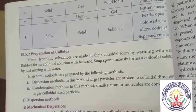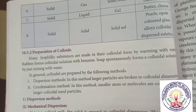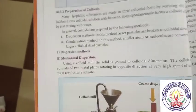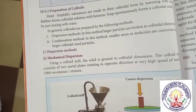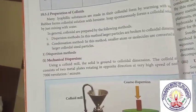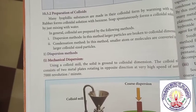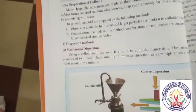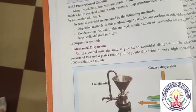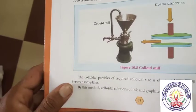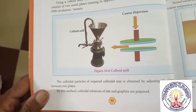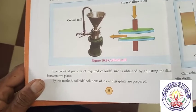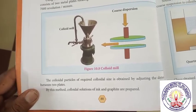In condensation methods, smaller atoms or molecules are converted into larger colloid-sized particles. Dispersion methods: first, mechanical dispersion — using a colloid mill, the solid is ground to colloidal dimensions. The colloid mill consists of two metal plates rotating in opposite directions at a very high speed of nearly 7000 revolutions per minute. Colloidal particles of the required size are obtained by adjusting the distance between the two plates.